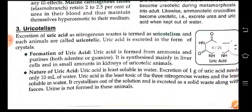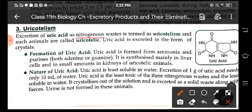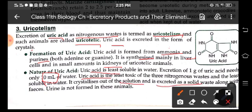Now uricotelism: the nitrogenous waste excreted as uric acid is termed uricotelism, and the animals are known as uricotelic. Uric acid is excreted in the form of crystals and is produced from ammonia and purines, and is mainly synthesized in the liver with a small amount in the kidney. Uric acid is the least soluble in water, requiring only 10 ml of water to dissolve. It is also the least toxic. It crystallizes out of solution and is excreted as a solid along with the faeces, and separate urine is not formed in these animals.